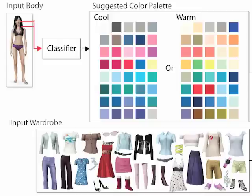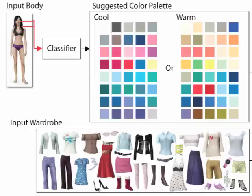We formulate outfit synthesis as an optimization problem. Here is an overview of our optimization approach. Our system inputs the hair color, eye color, and skin color, and assigns a cool or warm color tone to the character using a trained classifier. A suitable clothing color palette is then suggested to the user, and the palette serves as a soft constraint in the optimization.